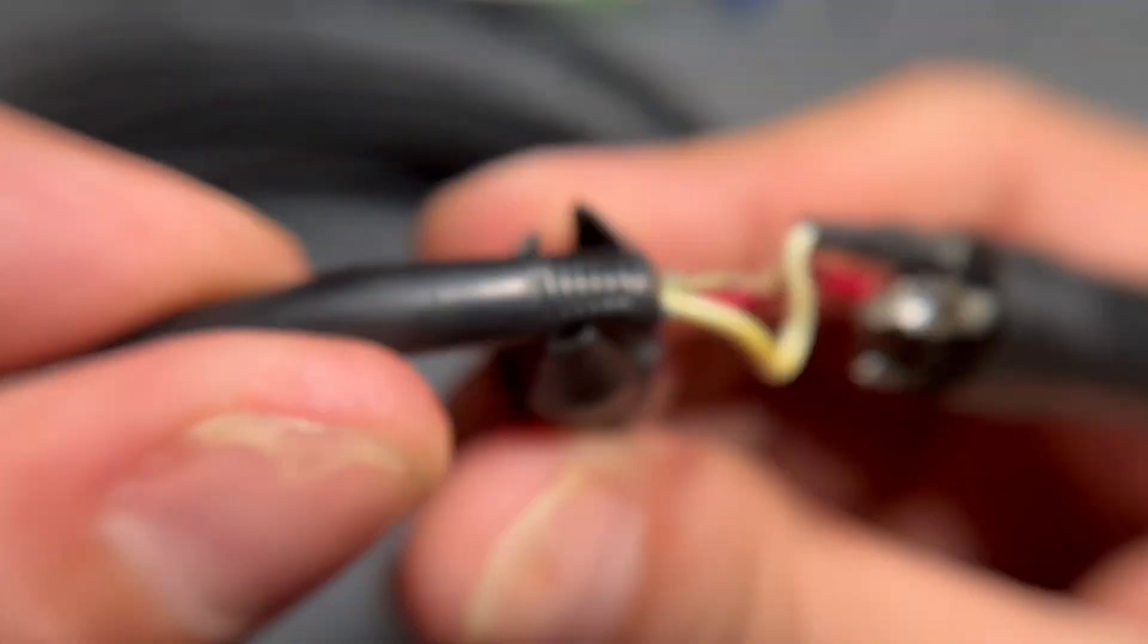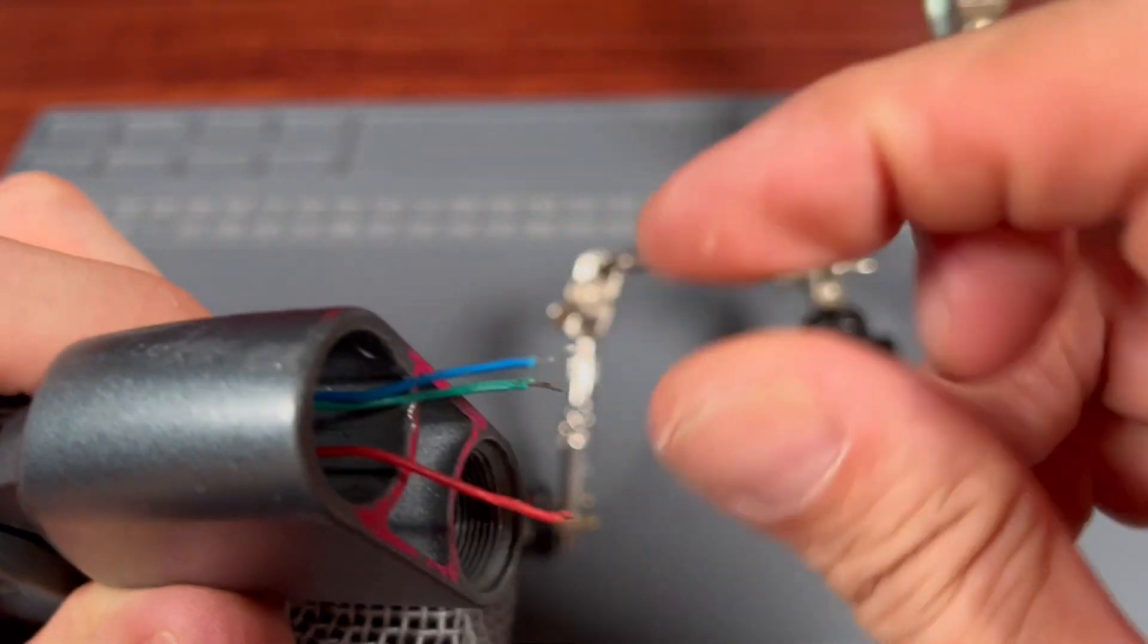We mean remove the outer insulation to expose the inner conductors. And with that, the wires are free and ready to be twisted into themselves.